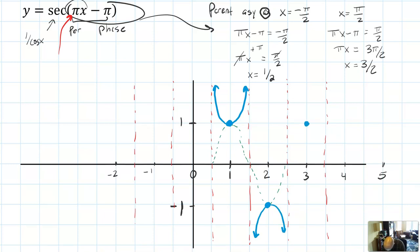That's one period. Two periods. That's two periods. And I'll go ahead and draw a third because I have space. And there's my third. So that's three periods of secant πx minus π.